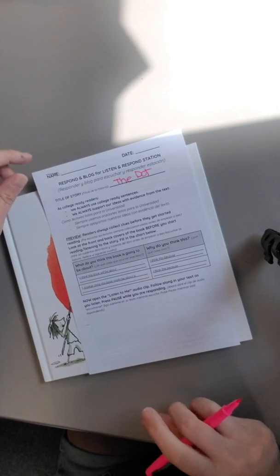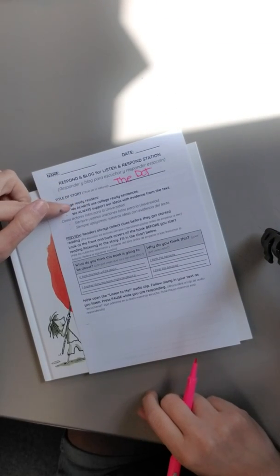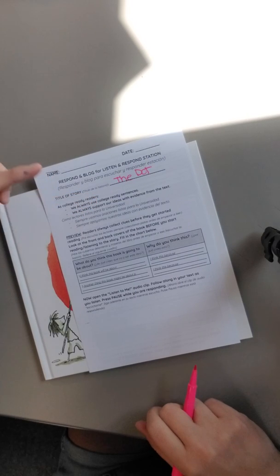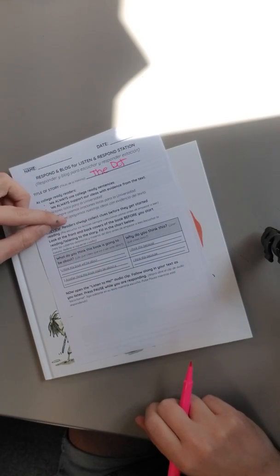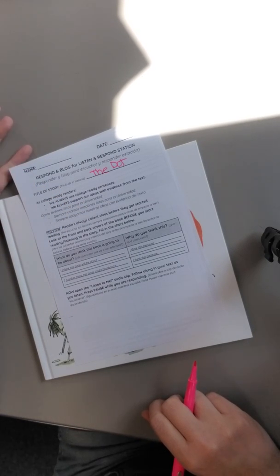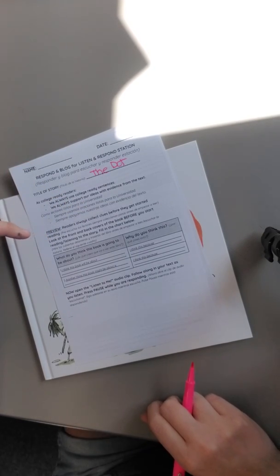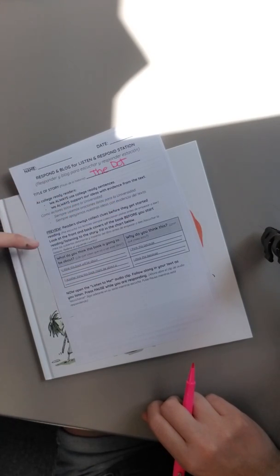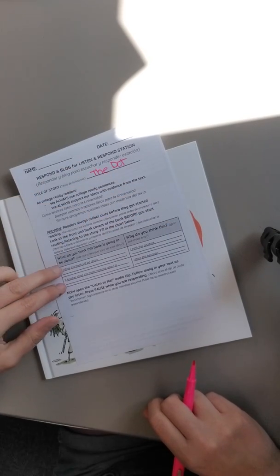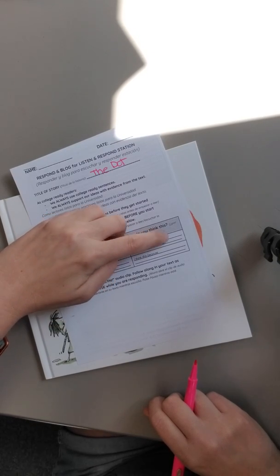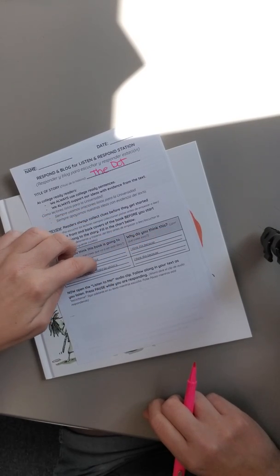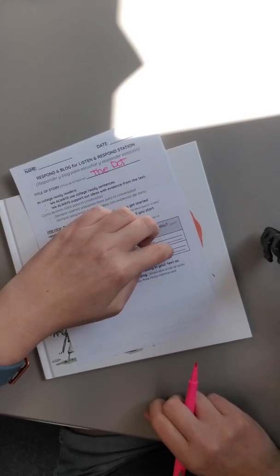Let's go ahead and get started. It says as college ready readers we always use college ready sentences and we always support our ideas with evidence from the text. The first one wants us to preview. Readers always collect clues before they get started reading. Look at the front and back covers of the book before you start reading or listening to the story and fill in the chart below. What do you think this book is going to be about? Why do you think this? So I have sentence starters here for you to fill in. I think this book will be about blank. I think this because blank. Another thing this book might be about is blank. I think this because blank.